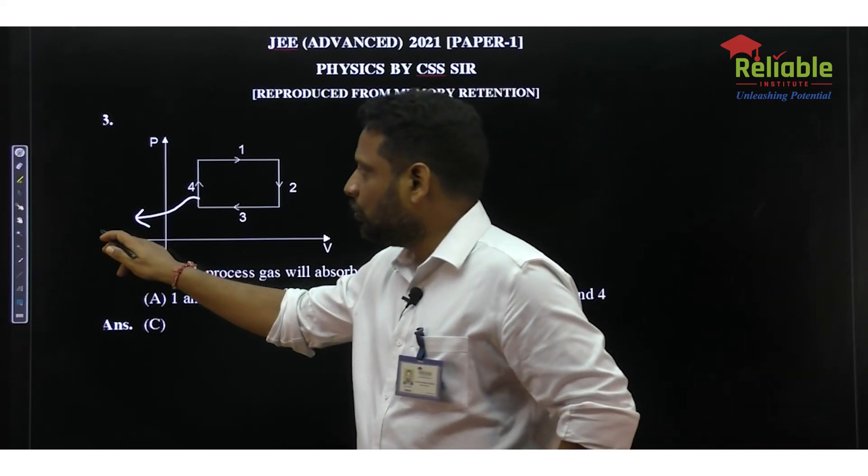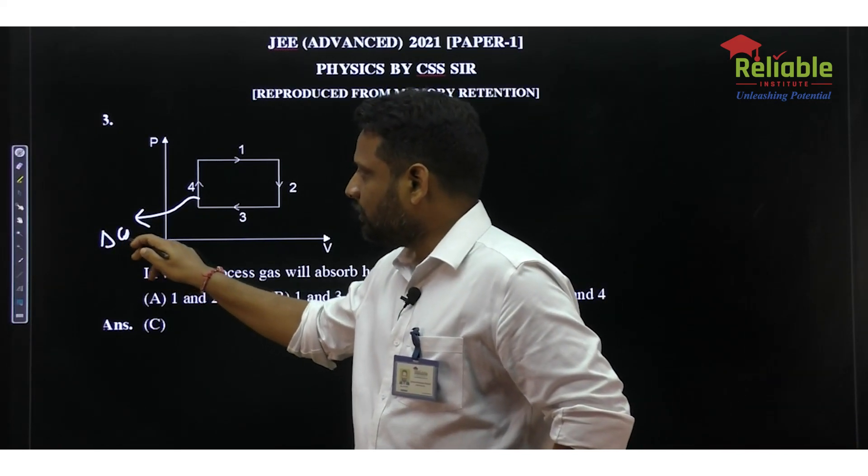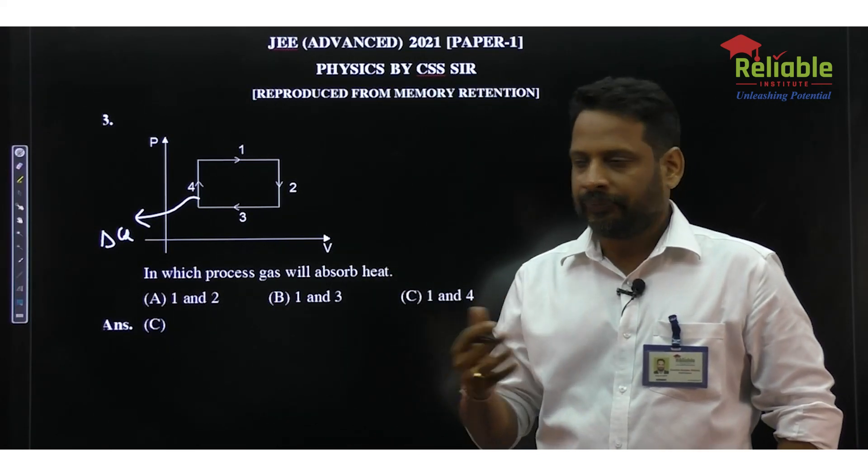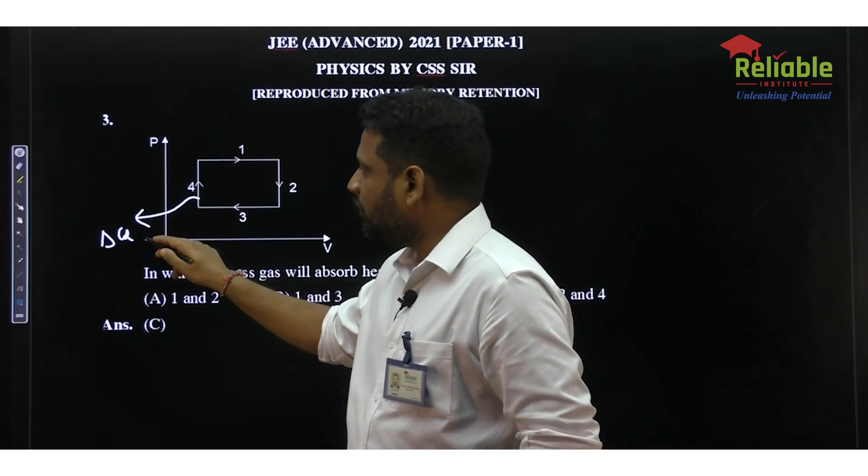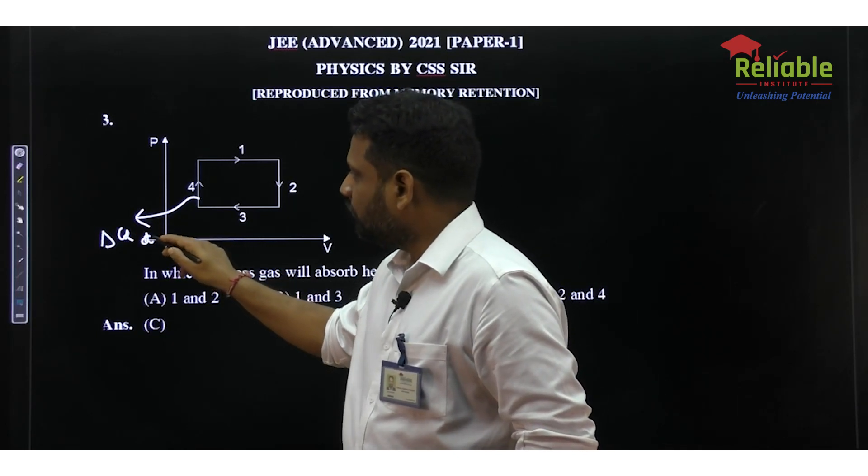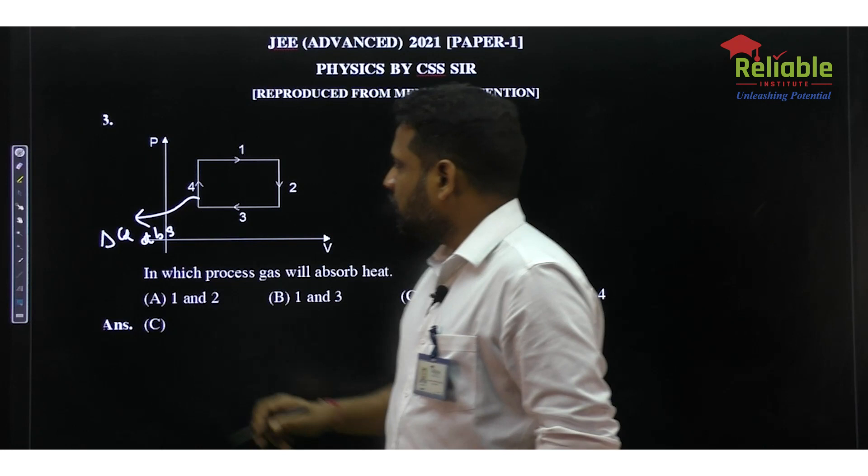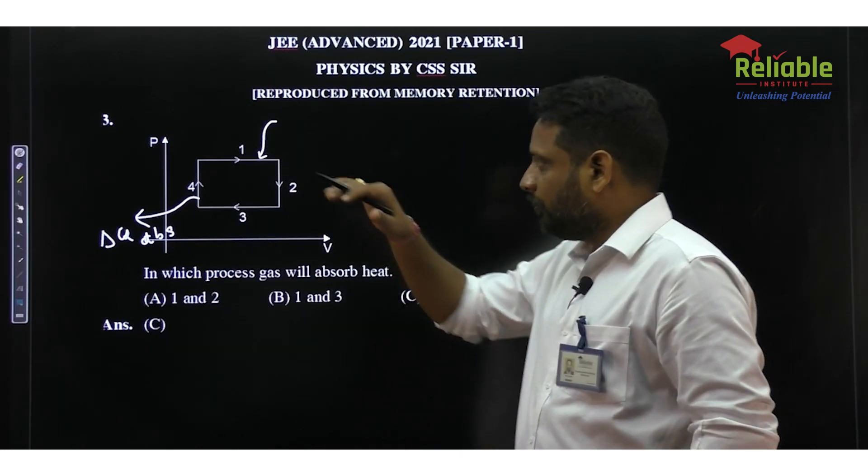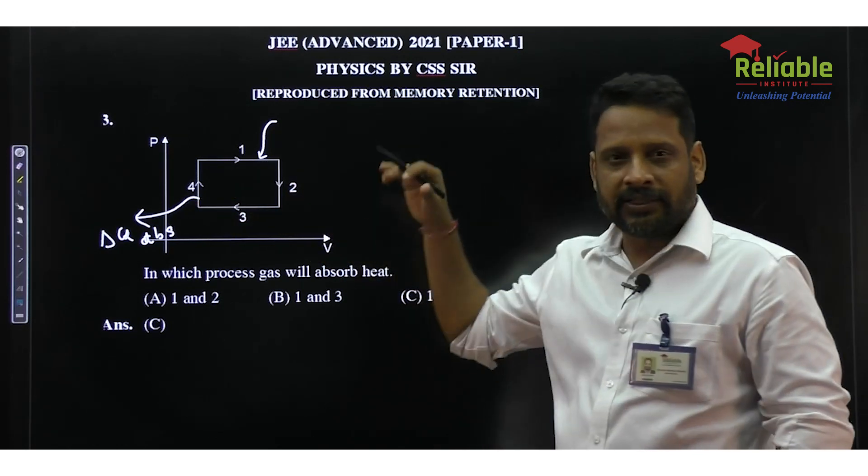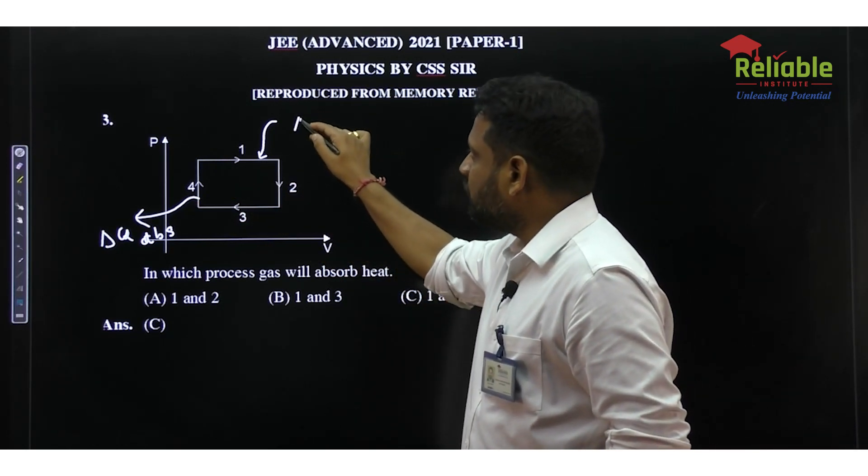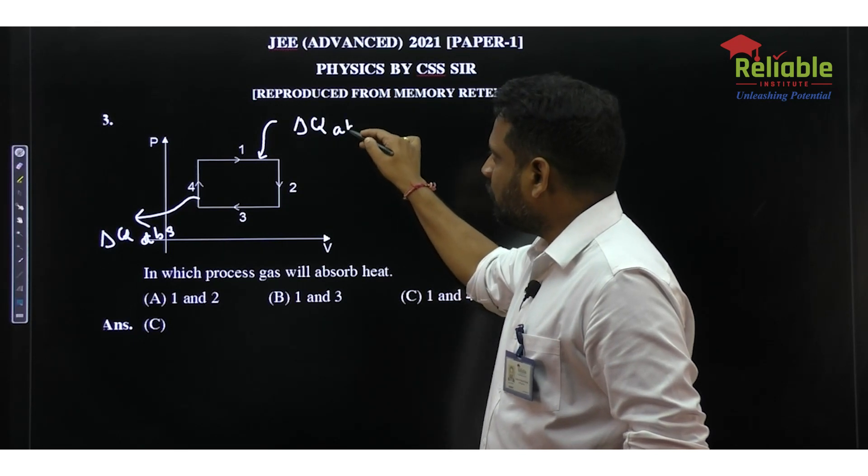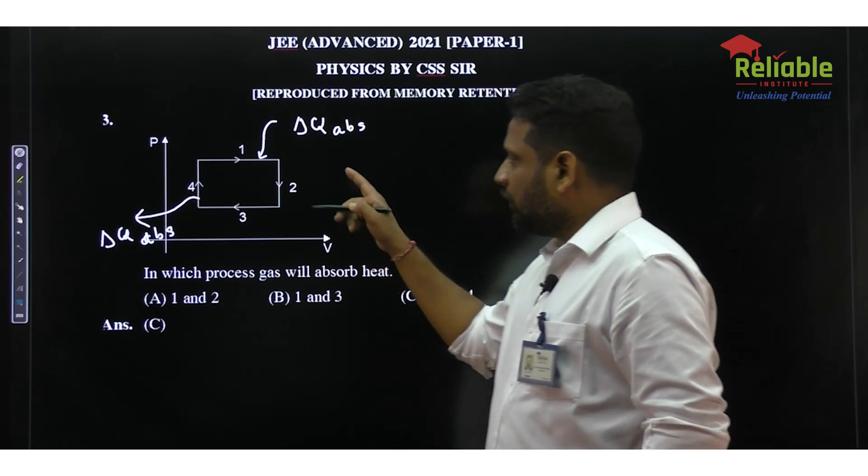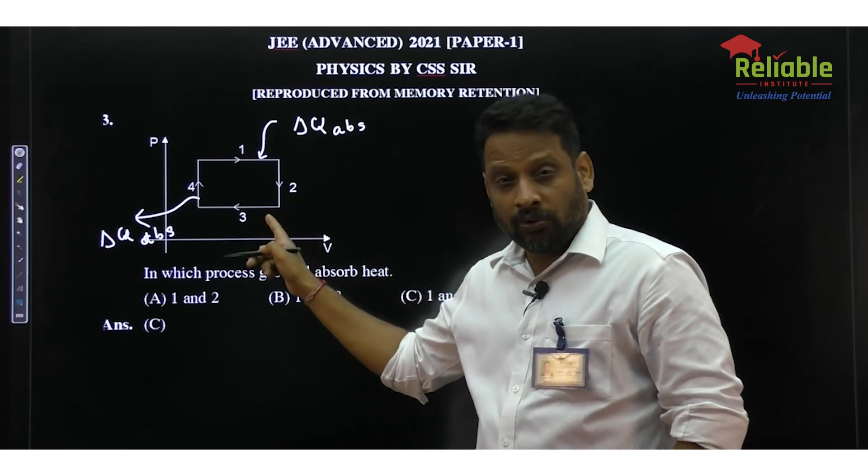So Delta Q is positive. Positive means heat is being absorbed by the gas, so this is the process where heat is absorbed. Similarly, in process 1, this is isobaric process. In this process, pressure is constant but volume is increasing, so again temperature increases and gas absorbs some heat.